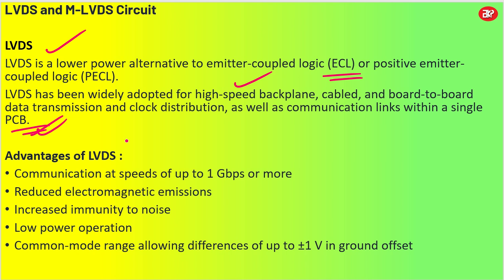Some advantages of LVDS: it can communicate at a speed of up to 1 Gbps or even more. It has very reduced electromagnetic emissions. It has very good increased immunity to noise. The best thing is it has very low power operation — very low power consumption. At the same time it has a common mode range allowing differences up to plus or minus 1 volt in the ground offset, so it can go up to plus or minus 1 volt up and down.